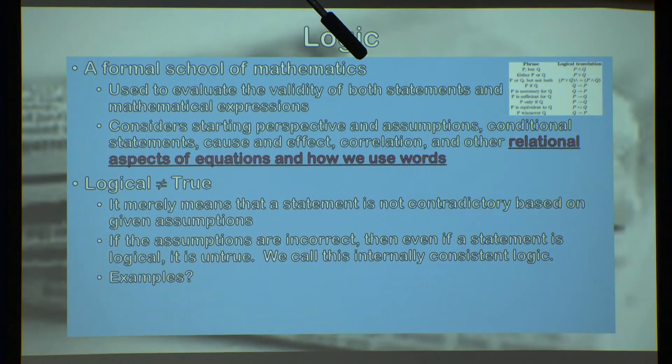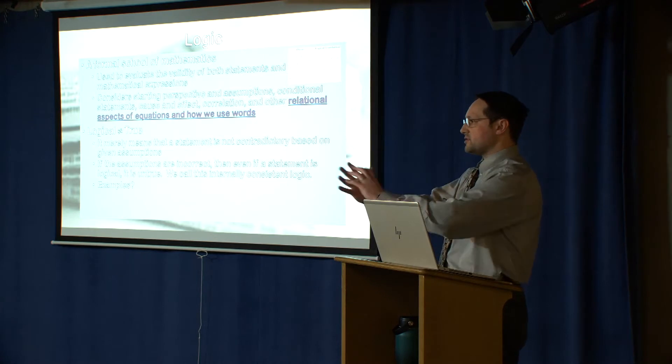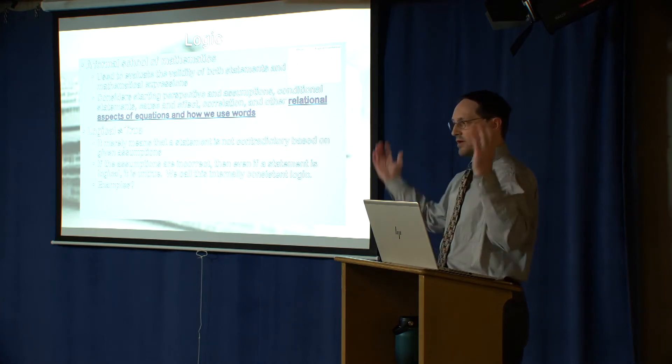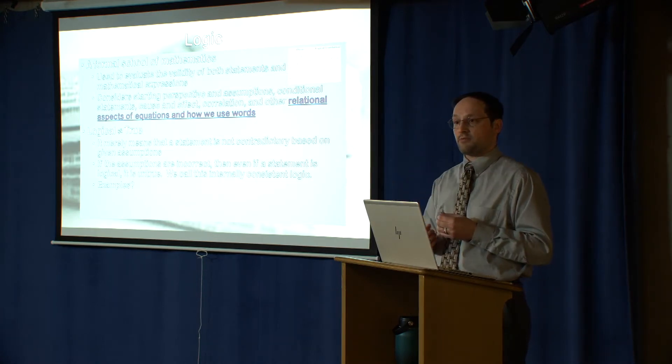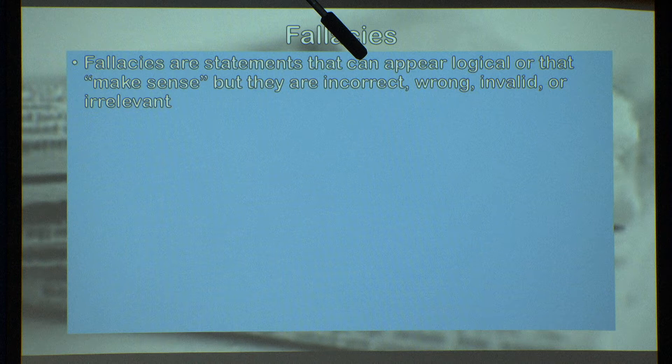If the assumptions are incorrect, then even if a statement is logical, it is untrue. We call this internally consistent logic. The statements themselves relate to each other in a way that is logically valid, but if the assumptions they're operating off of are incorrect, then even though it logically makes sense, it's still not true. And we see this quite regularly in news media. Can anyone think of any examples of this? Anything they've heard or read or seen recently where something makes logical sense on its own, but when you give it a context—remember last week we talked about how facts have context—if you give it a context, then it doesn't make sense anymore.